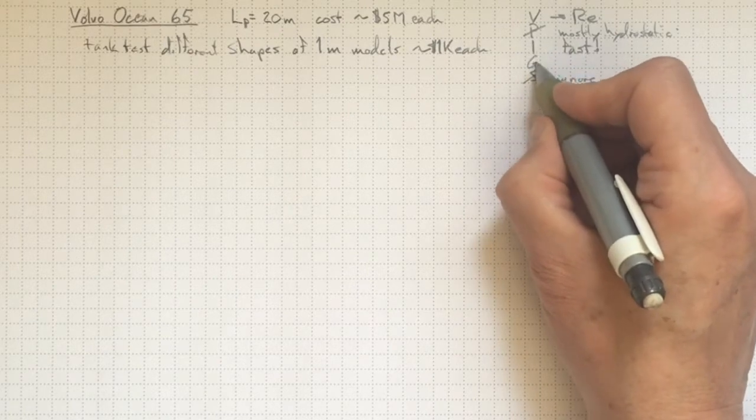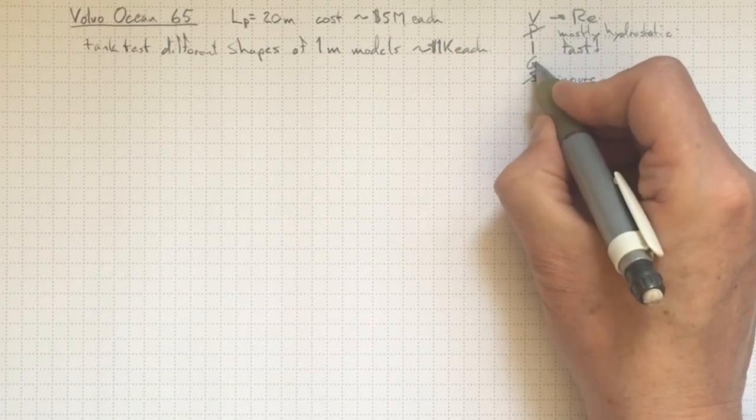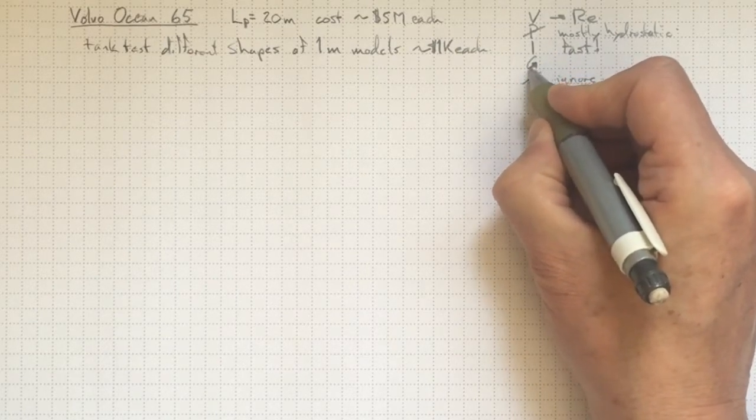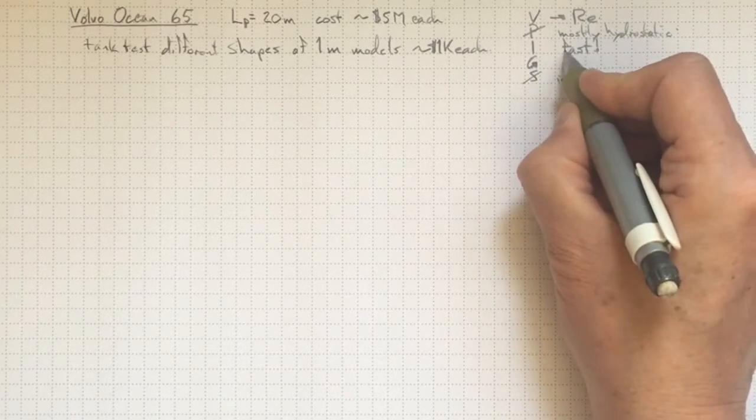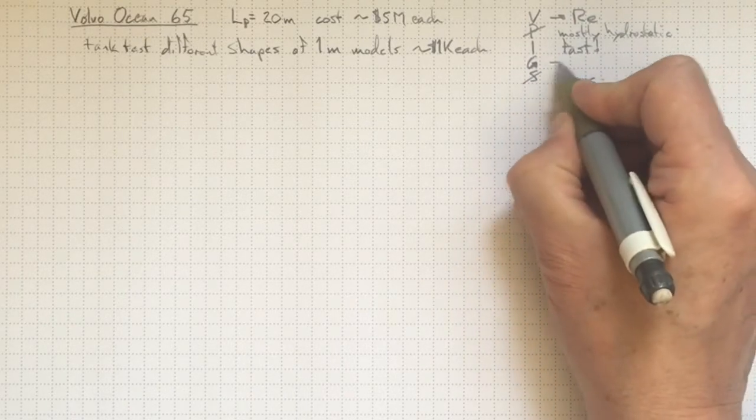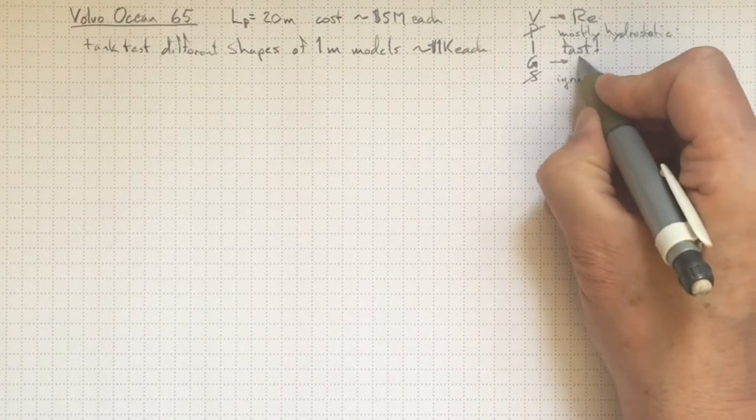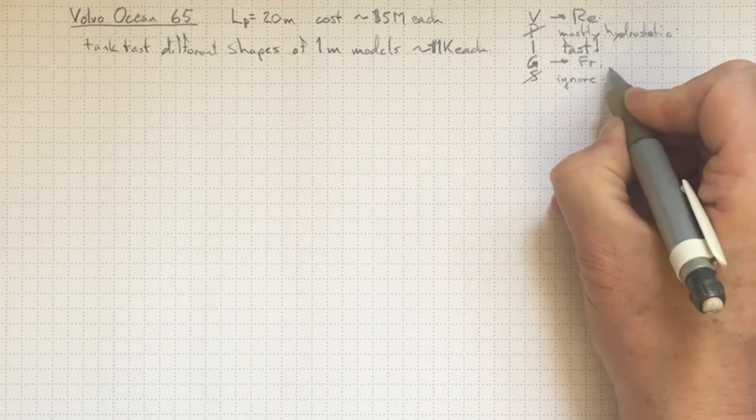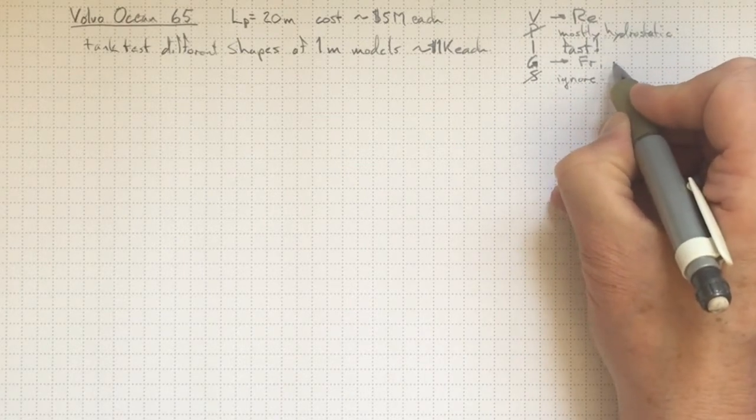Gravity is going to control the waves that we're producing as we move through the water, and that's going to be a big source of our resistance because these are fast boats that have to push a lot of water out of the way. So we're going to have to also think about Froude number similarity to see if we get the same sort of behavior.